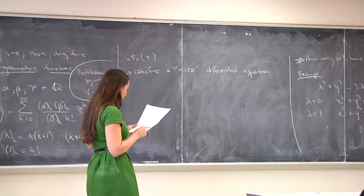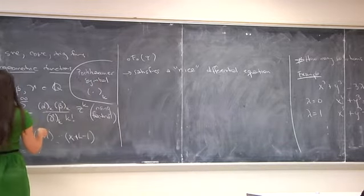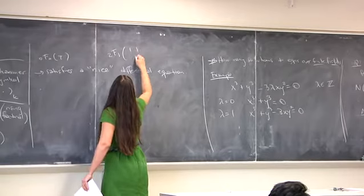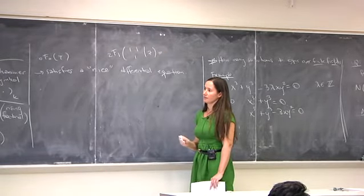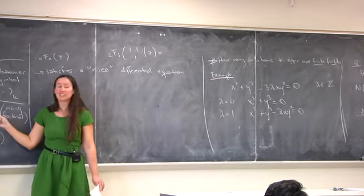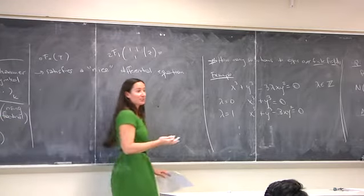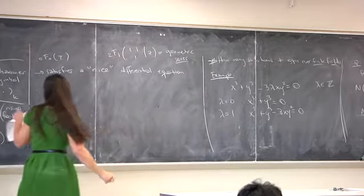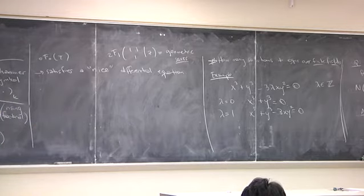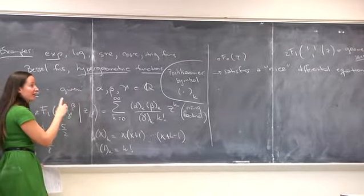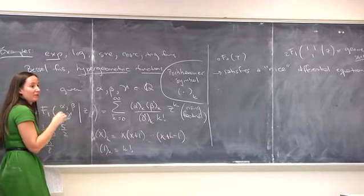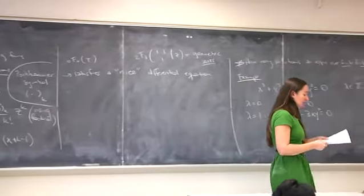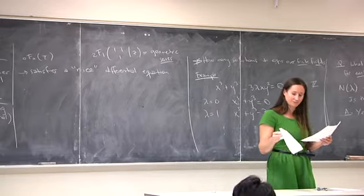Notice: if I have no parameters at all, ₀F₀(z) is just the sum of zᵏ/k!, which is the exponential function. And ₂F₁(1,1;1;z) is just the sum of zᵏ, the geometric series. This is where the name hypergeometric comes from — with the simple parameters it's geometric, and with more general parameters it's hypergeometric. These functions satisfy what I'll call a nice differential equation, meaning not too many singular points and well-behaved properties.